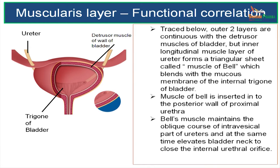Bell's muscle maintains the oblique course of the intravesical part of the ureter and it elevates the bladder neck. This is the neck of the bladder — it elevates the bladder neck in order to close the internal urethral orifice. That is the functional correlation of the muscular layer of the wall of the ureter.